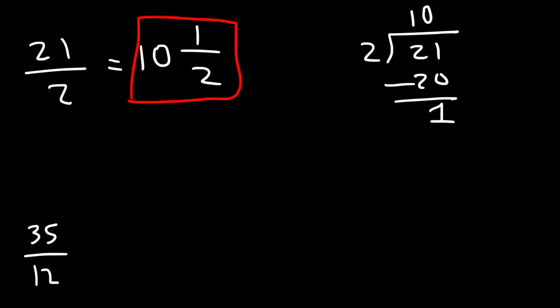Now what about the last one? How many times does 12 go into 35? 12 times 3 is 36, so that's too much. So it's 2. 12 times 2 is 24. And 35 minus 24 is 11. So the answer is going to be 2 and 11 over 12.